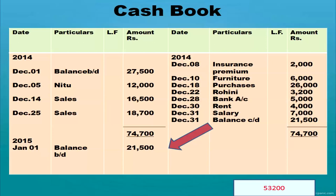When you are preparing the whole cash book, you write the opening balance, all receipts on the debit side, and all payments on the credit side. Then you have to total and balance the cash book. You total both sides — debit side total came to 74,700 and credit side total came to 53,200. There is a shortage on the credit side amounting to 21,500. You write the biggest total — 74,700 — on both sides.